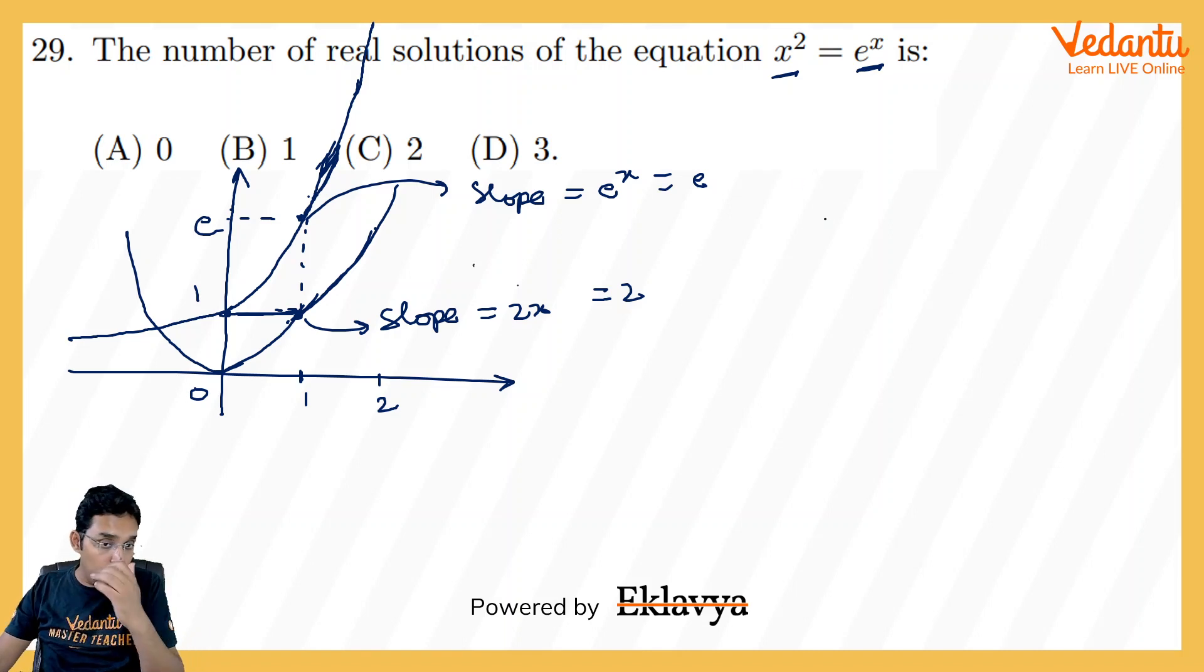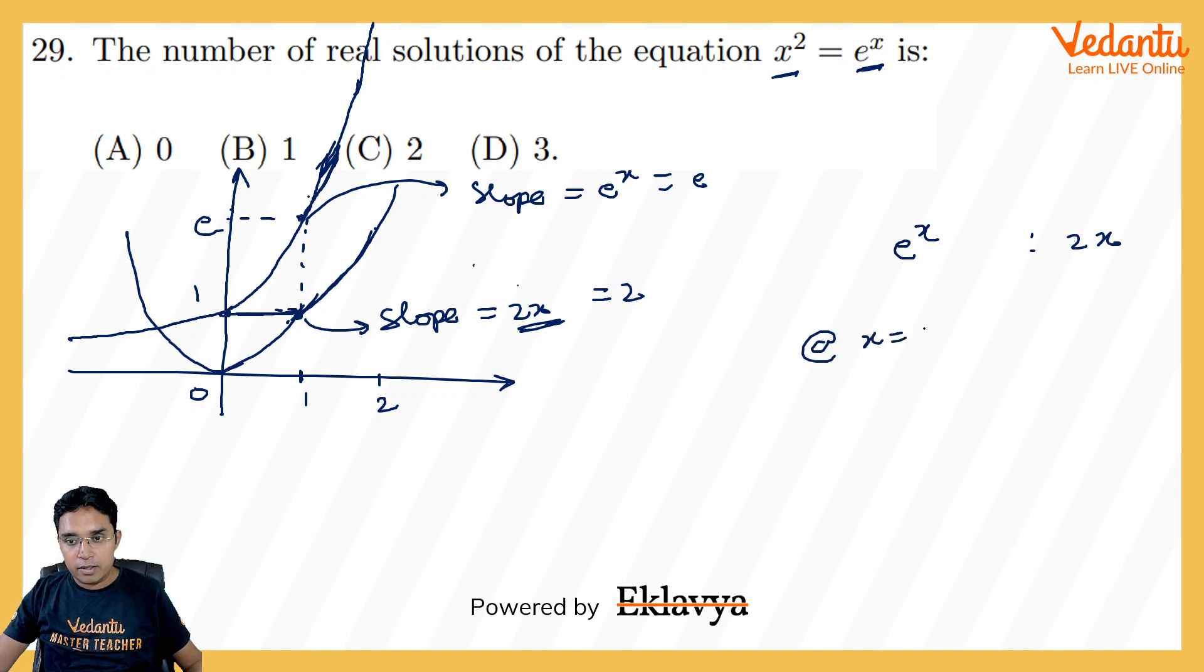Now, you may ask that maybe later on the slope of 2x will take over the slope of e power x. For that, let us just compare e power x and 2x. You can check at x is equal to 1, this e power x is e and 2x is 2 only. But if I further differentiate, this slope is going to be 2 for always.